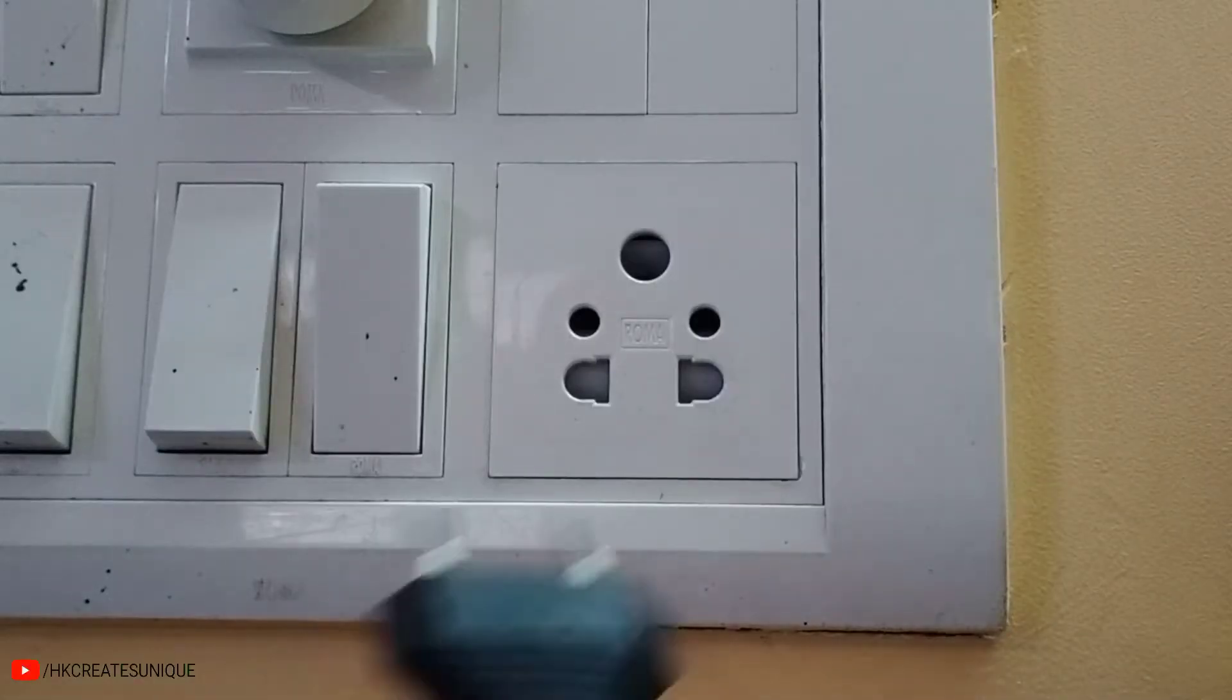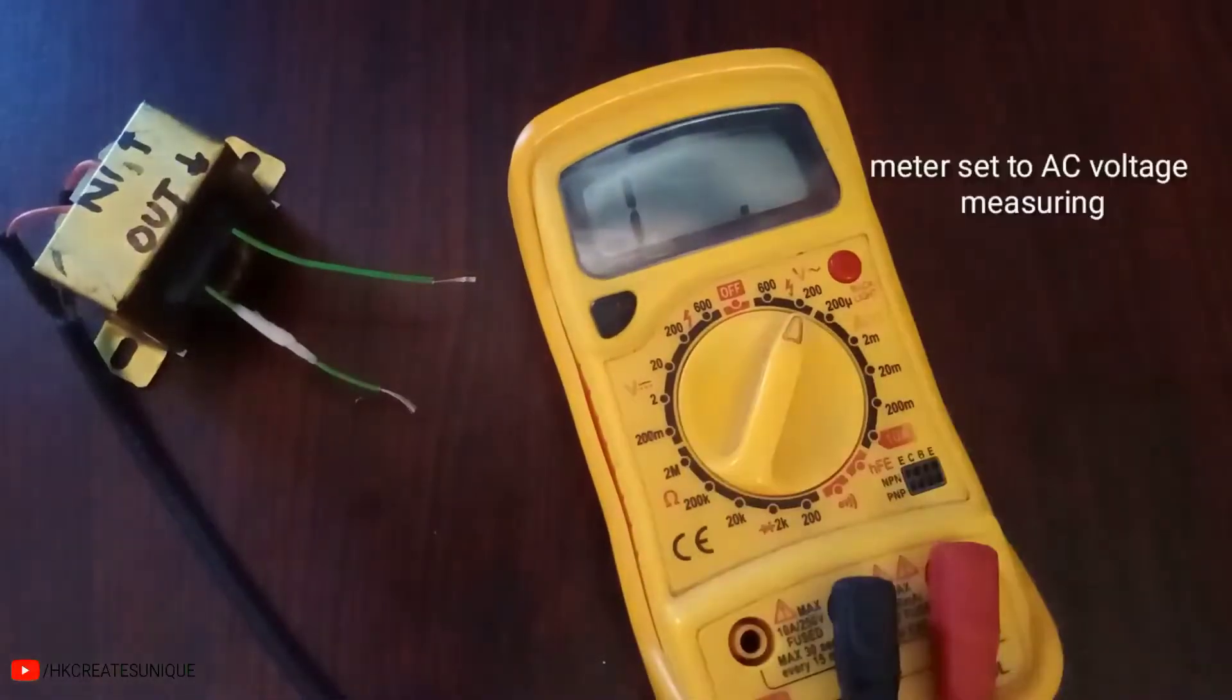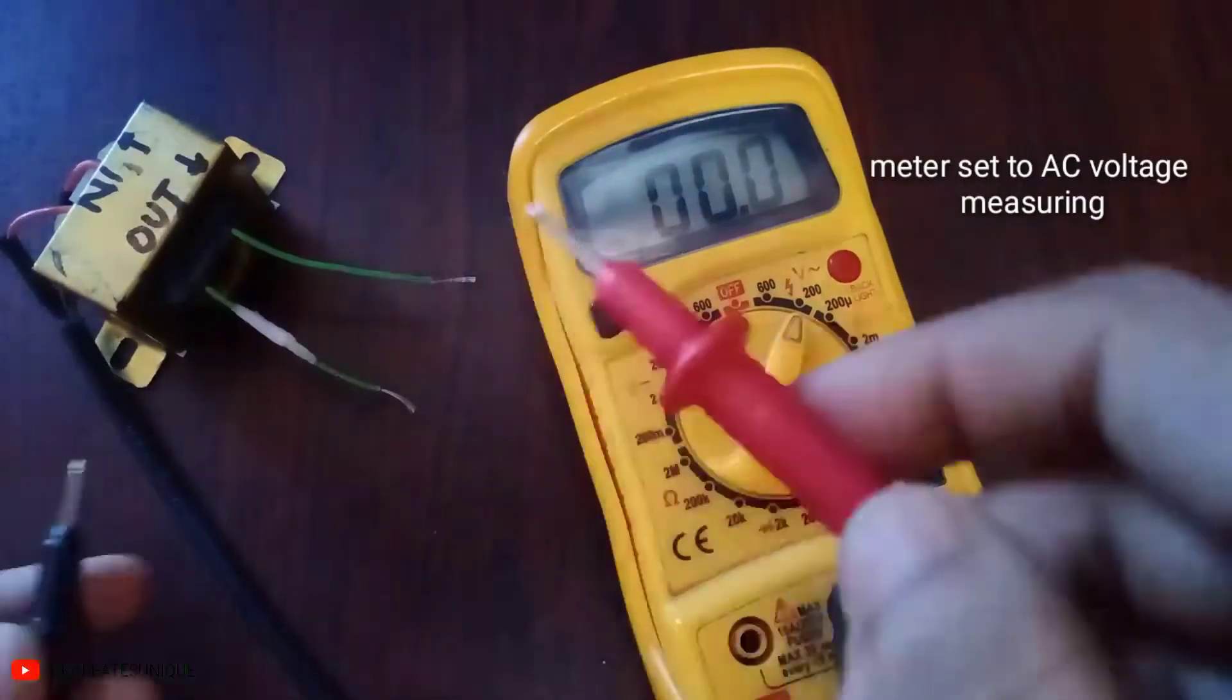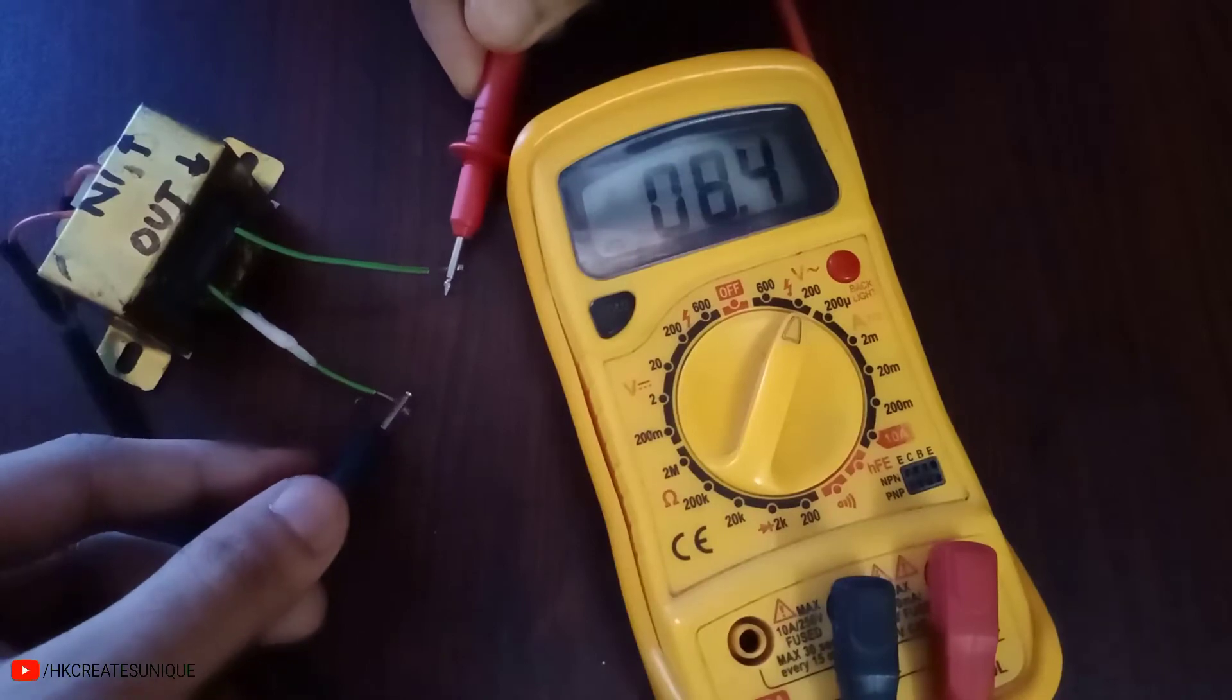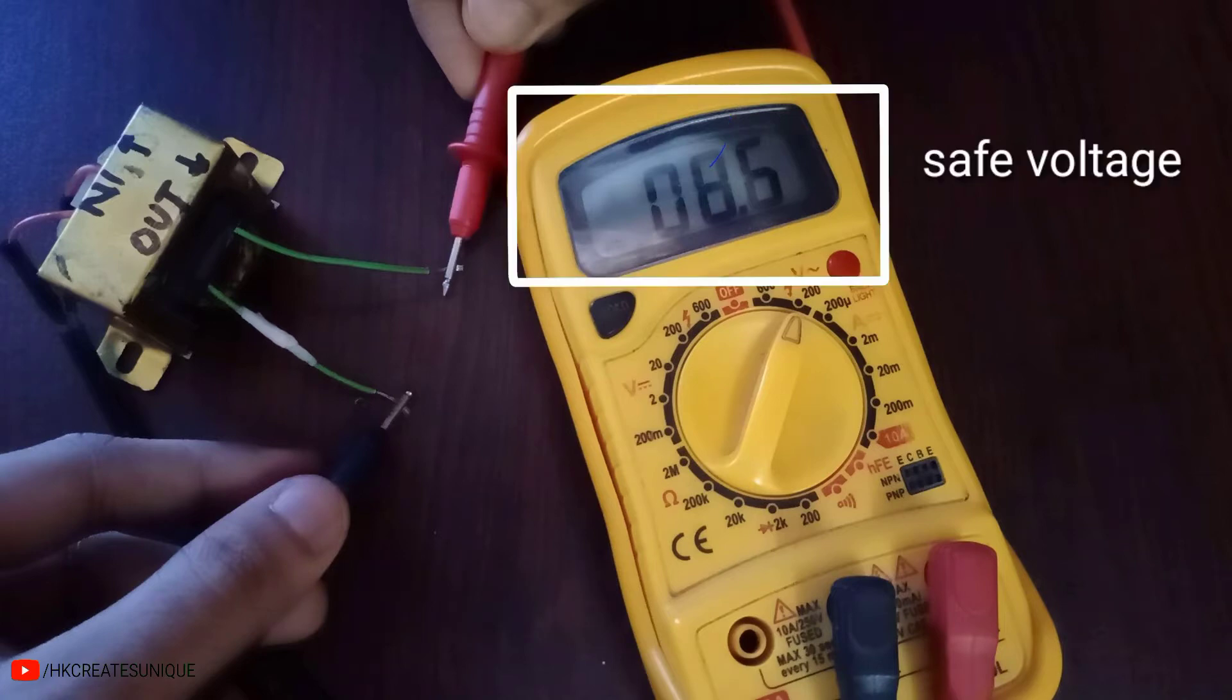Connect the plug to the wall outlet. Let's measure the voltage output. It is around 9 volts AC. So we get a safe voltage to work with.